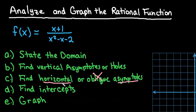If they're equal to each other or if the degree of the numerator is less than the degree of the denominator, then you will always have a horizontal asymptote. You have an oblique asymptote if the degree of the numerator is one more than the degree of the denominator.